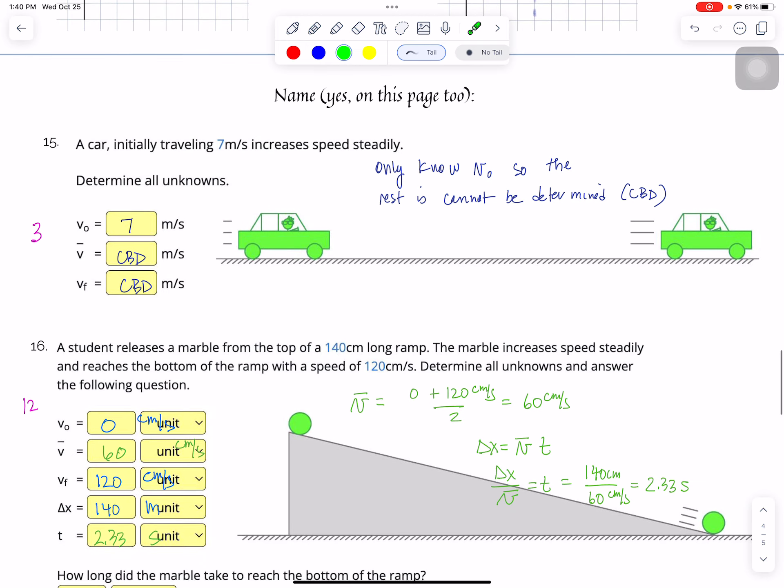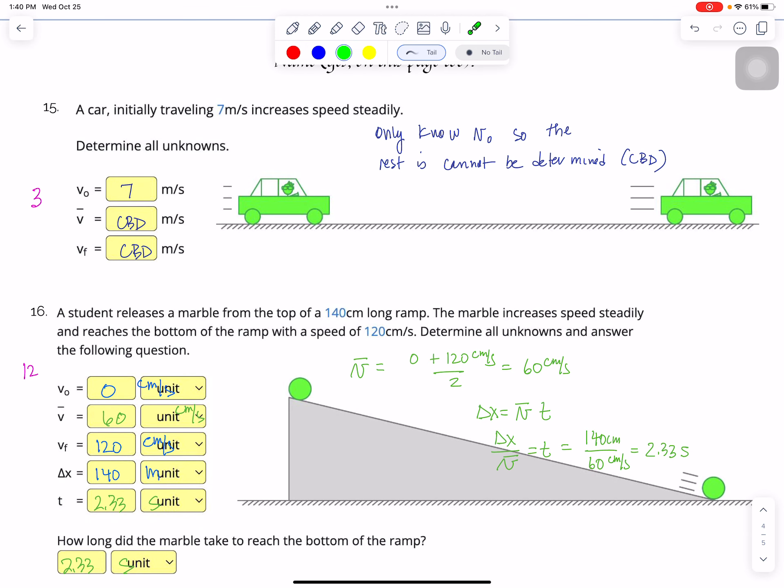Okay, last page. So a car is initially traveling at 7 meters per second, and it increases the speed steadily. I don't know anything else other than the initial velocity. So that is all I know is the initial velocity. Everything else cannot be determined. Three points. Generally, anytime I have positive physics questions, it's always one point per box.